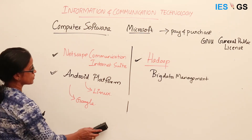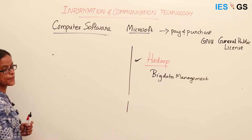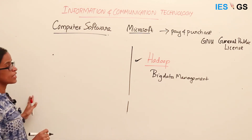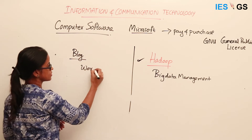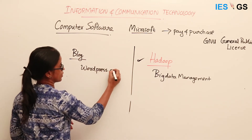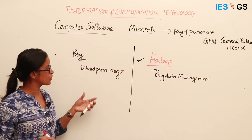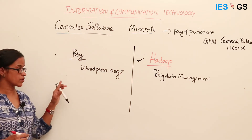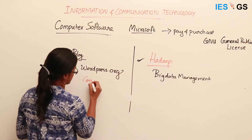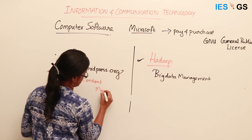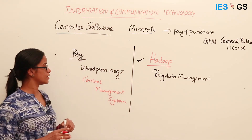There are many other common open source software used for education, presentation, content generation, and on the web. One of the most common uses is in blogging with WordPress.org, which is different from WordPress.com which is not open source. WordPress.org is an open source software that allows users to create their own blogs and is a content management system that helps manage content on a web page.